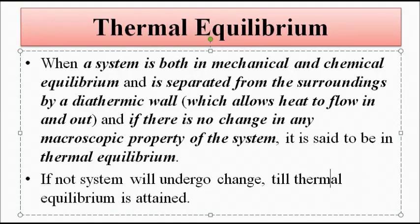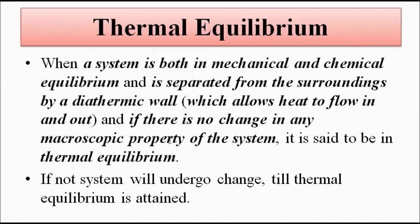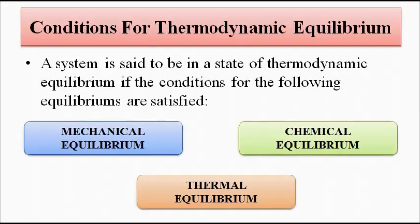If the system is not in thermal equilibrium, there will be transfer of heat energy in and out of the system until thermal equilibrium is attained. So the thermal equilibrium condition requires that the system be in mechanical and chemical equilibrium, separated from surroundings by a diathermic wall, with no transfer of heat and no change in macroscopic properties detected. When all three conditions — mechanical, chemical, and thermal equilibrium — are satisfied, the system is said to be existing in a state of thermodynamic equilibrium.